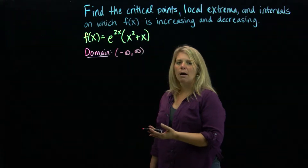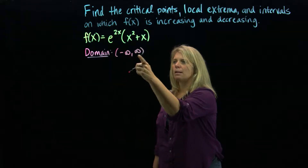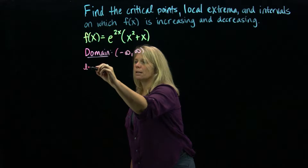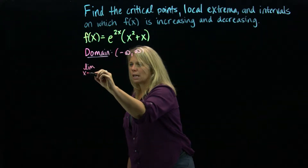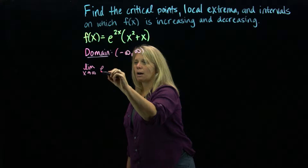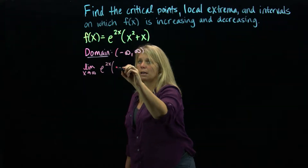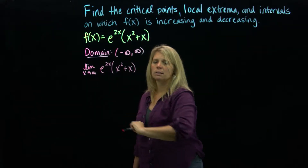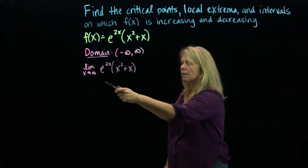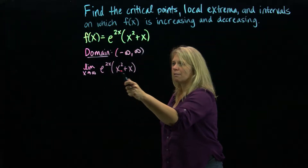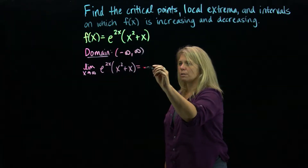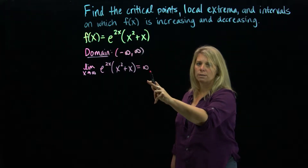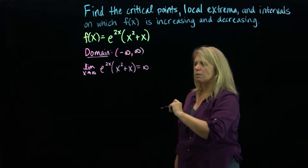I might think about end behavior — what happens to the output values of this function as x approaches infinity or negative infinity. You can use theorems from earlier in the semester, or plug in very large values of x on your calculator. As x approaches infinity, everything here gets very large, so this function approaches infinity, meaning the right-hand side of the graph goes up.